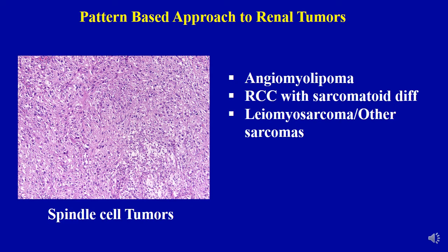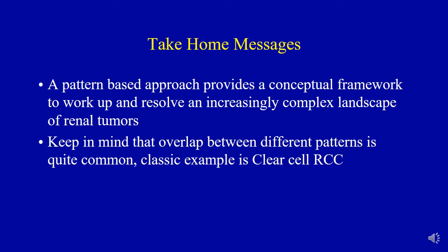This has been a brief outline of the six patterns and the entities that fall within them. The key take-home message is that utilizing a pattern-based approach provides a conceptual framework to work up and resolve an increasingly complex landscape of renal tumors. Keep in mind that overlap between patterns is quite common — the classic example being clear cell renal cell carcinoma. I will put a second video shortly focusing on clear cell renal cell tumors, and will continue adding more pattern-based approaches for renal tumor classification over time. Thank you for your attention — if you liked this video please give a thumbs up and look forward to more videos.